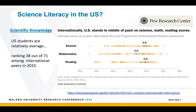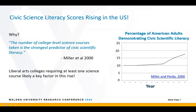The other aspect of science literacy I want to discuss is closely related to information and research literacy: the ability to critically evaluate the quality of information based on its source and the methods used to generate it. When it comes to content knowledge, Americans are very middle of the road compared internationally, ranking around 38 out of 71 in these types of studies. However, there is one metric in which Americans have really improved recently: civic science literacy.